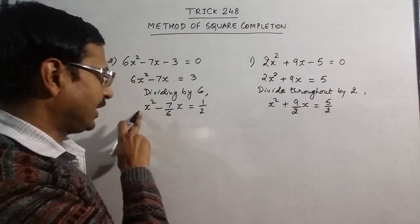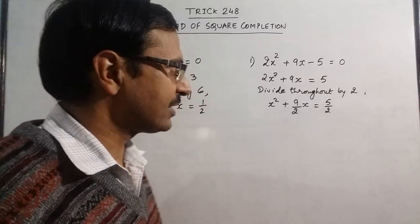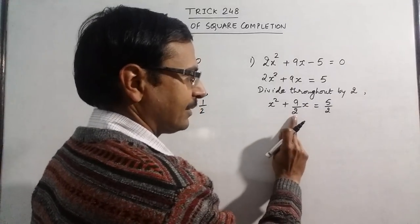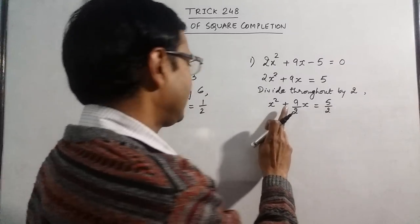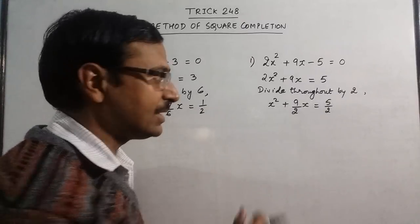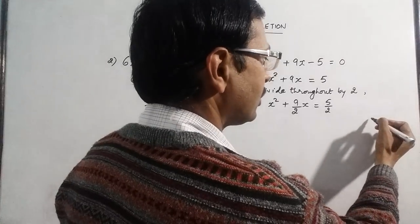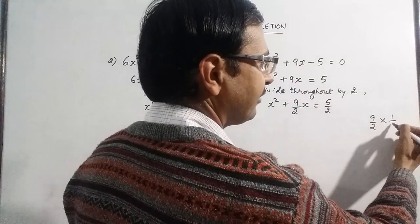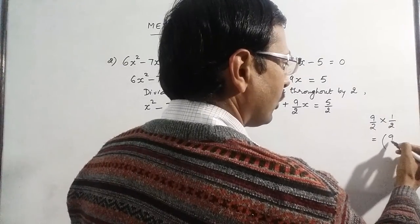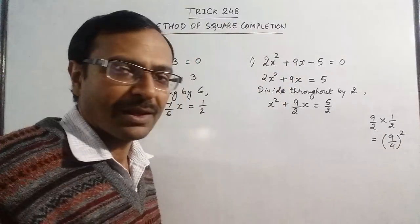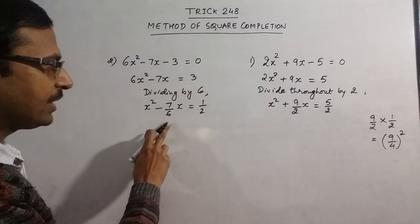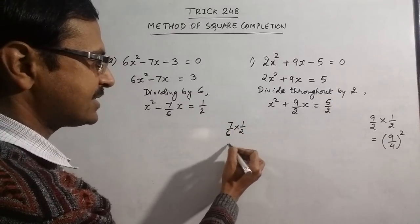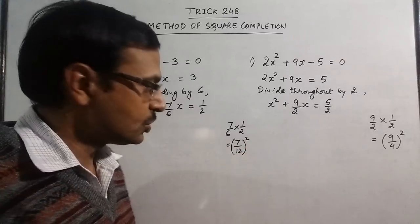Now, after making the coefficient of x² equal to 1, the next step is very important — this is the step where students get stuck. Just look at the coefficient of x, which is 9/2 in the first equation. Multiply this coefficient by half: 9/2 × 1/2 = 9/4. Then square it to get (9/4)². Similarly, in the second equation the coefficient of x is 7/6; multiply by half to get 7/12, then square it to get (7/12)².